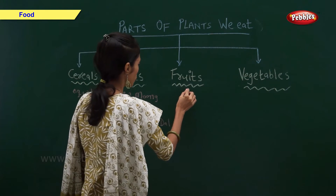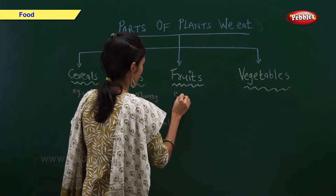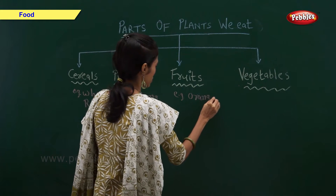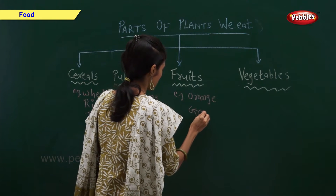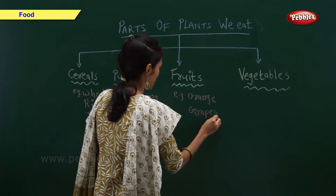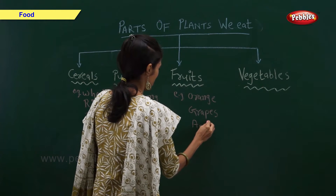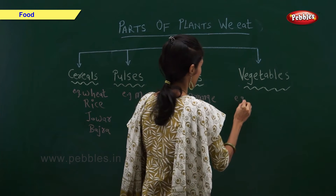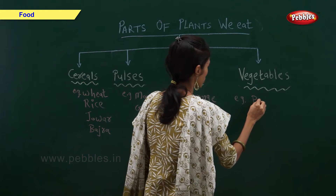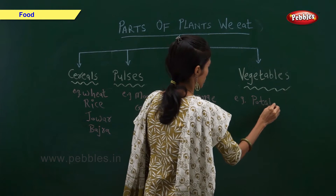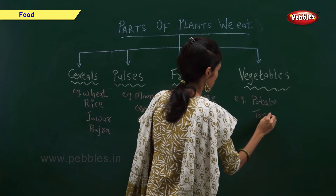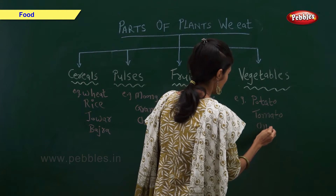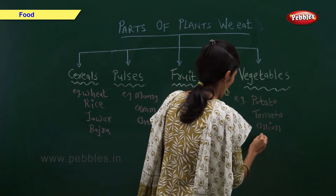Examples of fruits are orange, grapes and apple. Examples of vegetables are tomato, onion and brinjal.